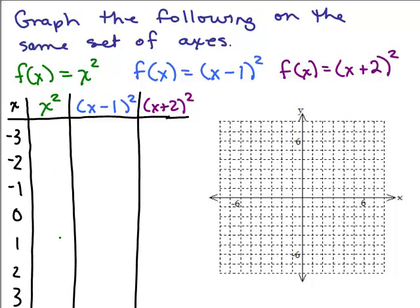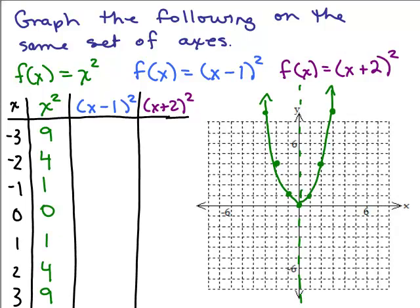We've been graphing f of x equals x squared or y equals x squared several times in the first two videos on parabolas. These are the ones you want to basically always remember: negative 3, 9, negative 2, 4, negative 1, 1, etc. We get this basic shape of the parabola. The vertex goes through 0, 0, it's going up and the axis of symmetry is at the y axis at x equals 0.